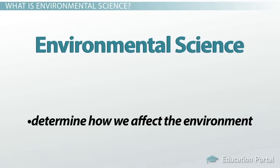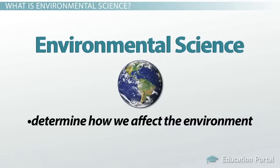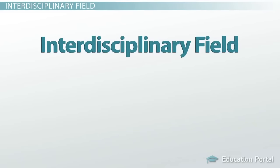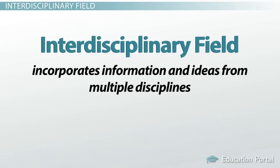The third goal of determining how humans affect the environment also includes finding ways to deal with these effects on the environment. Environmental science is also referred to as an interdisciplinary field, because it incorporates information and ideas from multiple disciplines.